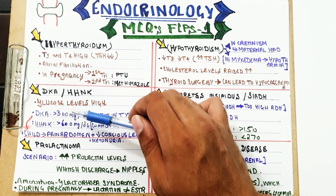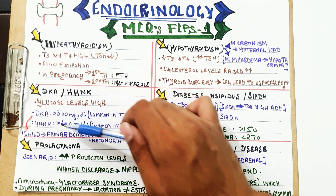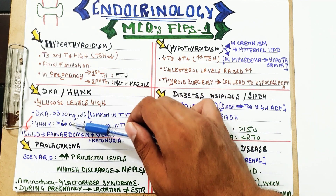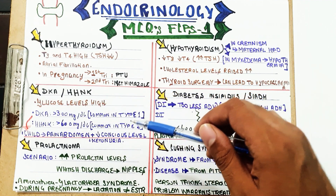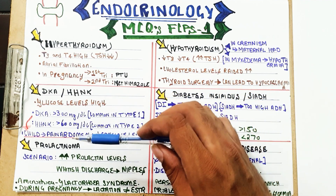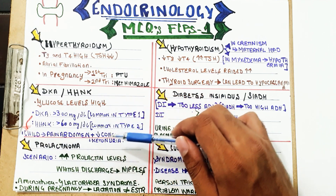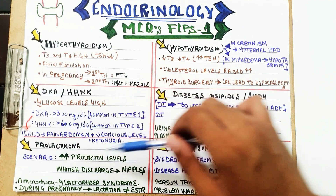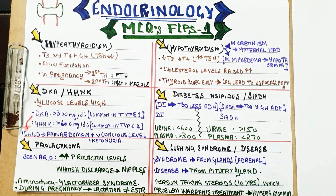DKA occurs mostly when glucose levels are above 300 mg/dL, whereas HHNK occurs when glucose levels are above 600–700 mg/dL. In FCPS Part 1 papers, a common scenario is a child with abdominal pain, decreased conscious level, and proteinuria with high glucose levels — your suspicion should be DKA.